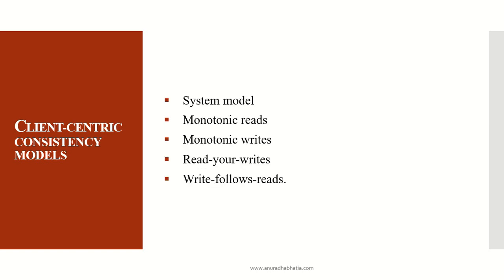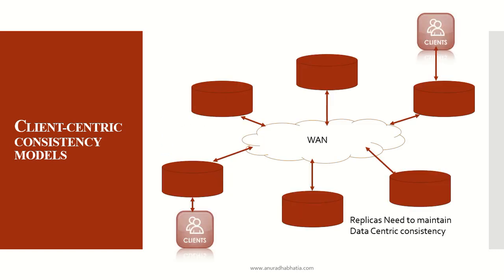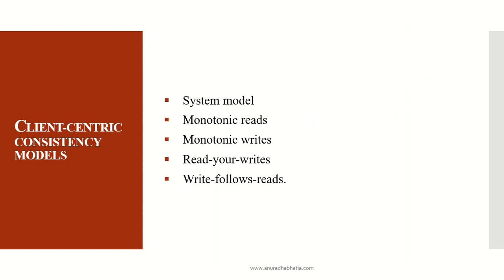The client-centric consistency model includes four properties: monotonic reads, monotonic writes, read-your-writes, and write-follows-reads. In the client-centric model, consider a wide-area network with local data at multiple locations. As a client moves geographically, they should be able to use the data from their new location. Replicas need to maintain data-centric consistency so that data is the same everywhere. The best example of client-centric consistency is mobile-centric consistency.